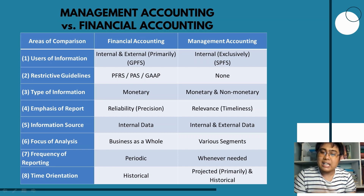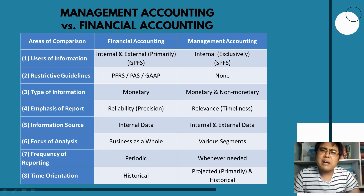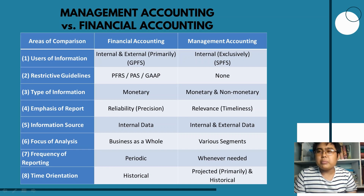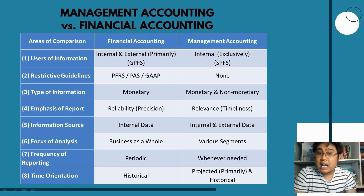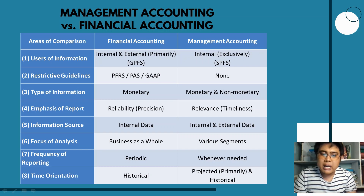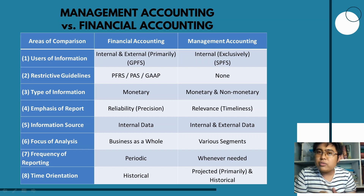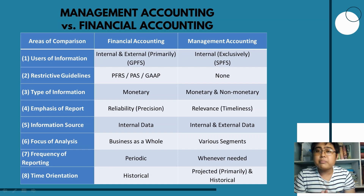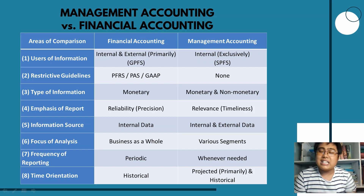Management accounting produces special purpose financial statements because they address the specific needs of the user. For example, if your boss asks for a report on employee turnover — how quickly employees resign and are replaced — you cannot put that in financial accounting because not all users care about it. But in management accounting, you provide exactly what the boss needs. Financial accounting, following PFRS, can only address common needs through general purpose financial statements.